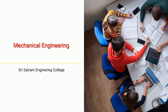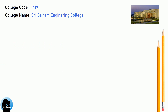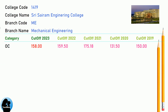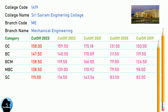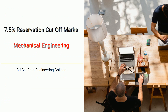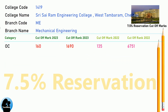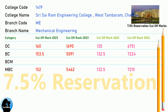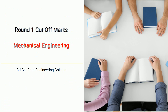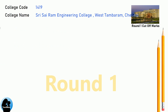DNA Cut-off for Shri Sai Ram Engineering College in Mechanical Engineering. DNA 7.5 Reservation Cut-off for Shri Sai Ram Engineering College in Mechanical Engineering. DNA Round 1 Cut-off for Shri Sai Ram Engineering College in Mechanical Engineering.